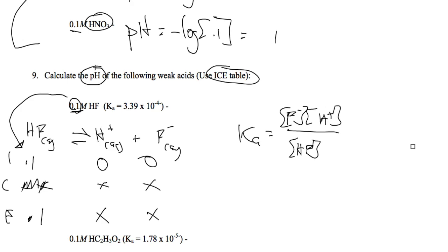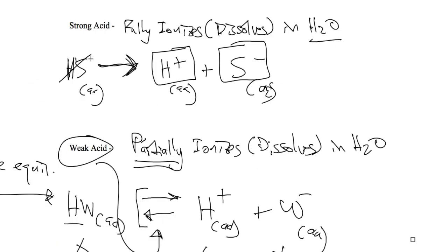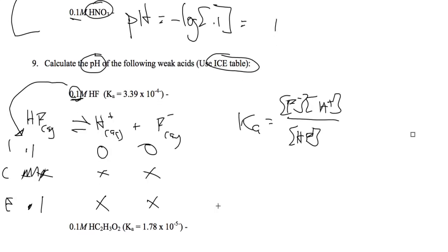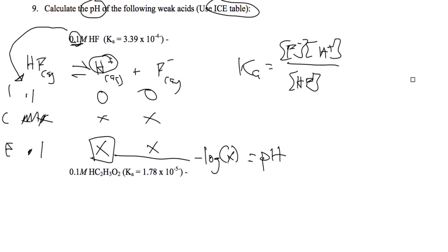Now the problem is asking for the pH, and the equation for pH is the negative log of the H plus. So we need to get the negative log of H plus, which is X. So when we find X, we're going to take the negative log of X, and that's going to be the pH.